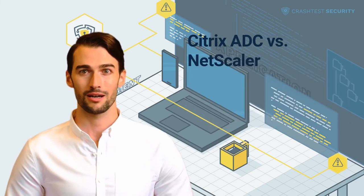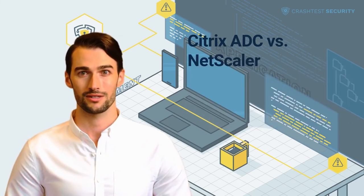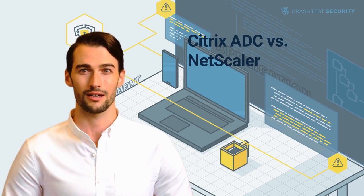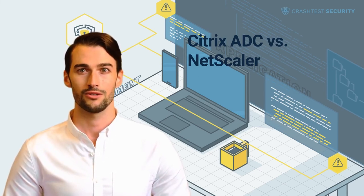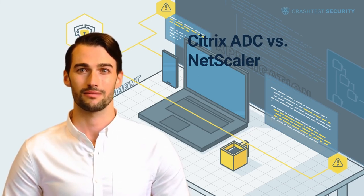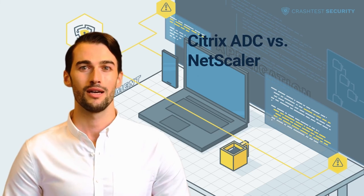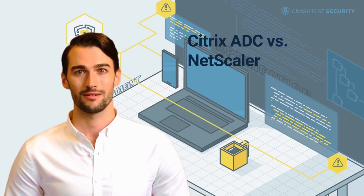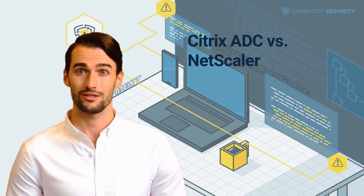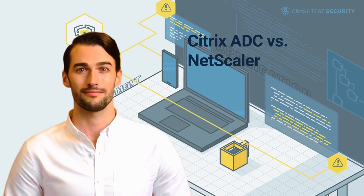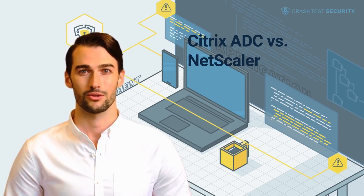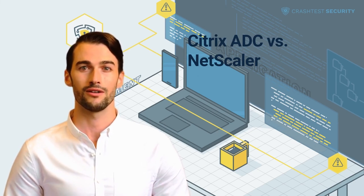Citrix and Netscaler are different brand names that refer to the same line of products, though these have changed over time and have become more consolidated. Citrix acquired the Netscaler brand in 2005. In 2016, Citrix consolidated all of its networking products under the name Netscaler, and what's currently known as the Citrix ADC line of network appliances was called Citrix Netscaler. Finally, the Netscaler brand was changed in 2018, with Citrix ADC remaining the official name of this line of products.